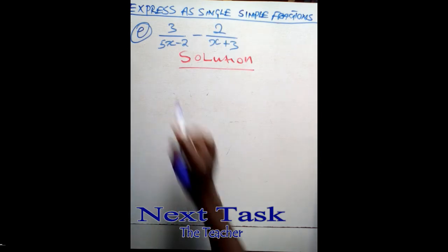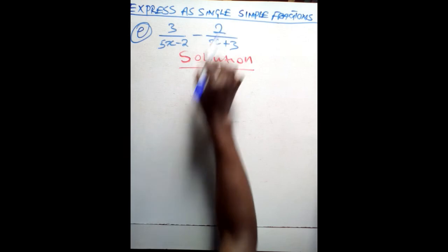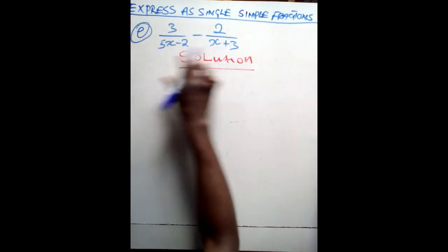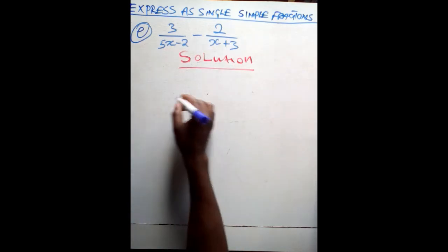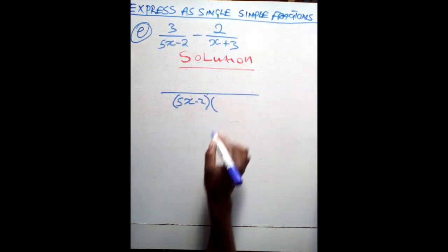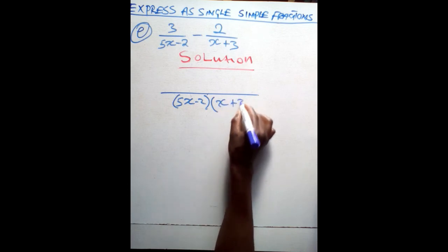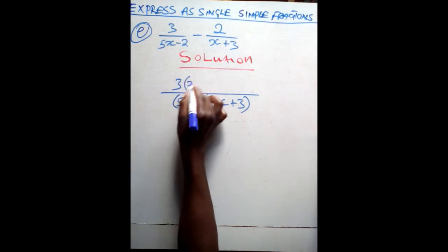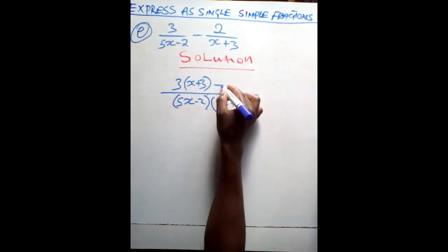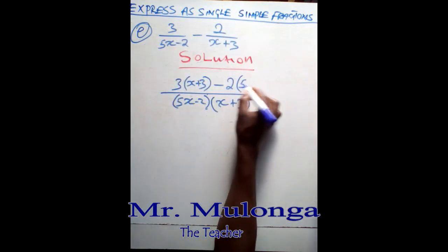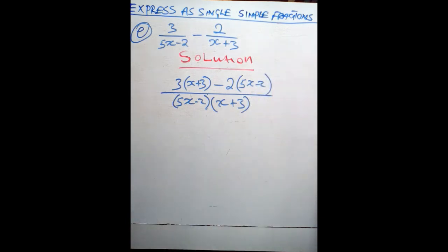We have another question on the solving board: 3 over (5x minus 2) minus 2 over (x plus 3). What do you do first of all? You find the lowest common denominator. The lowest common denominator is going to be the product of these two. So you draw a line, which stands for division, then you say (5x minus 2)(x plus 3). Then from there, you cross multiply: 3 cross multiplied with (x plus 3) — there is a minus in the middle so it has to come down — then 2 cross multiplied with (5x minus 2).